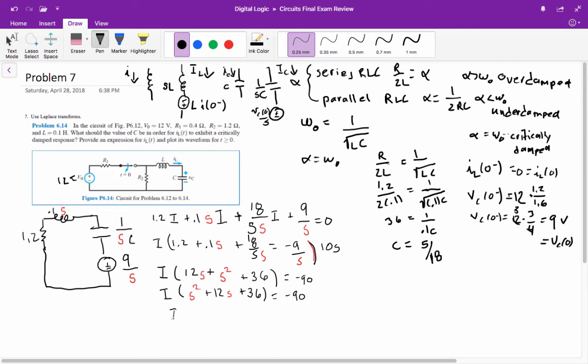This factors nicely into S plus 6 squared. So I divide both sides by S plus 6 squared, and I get I equals negative 90 over S plus 6 squared.